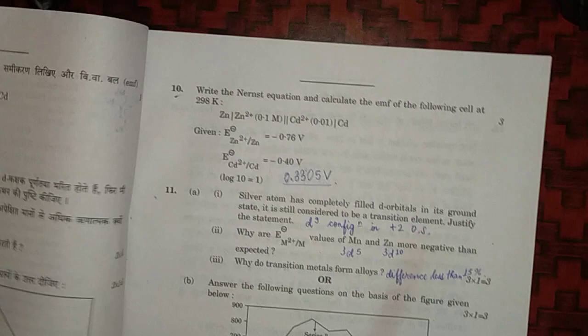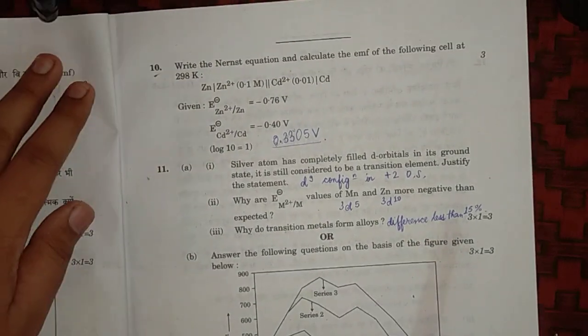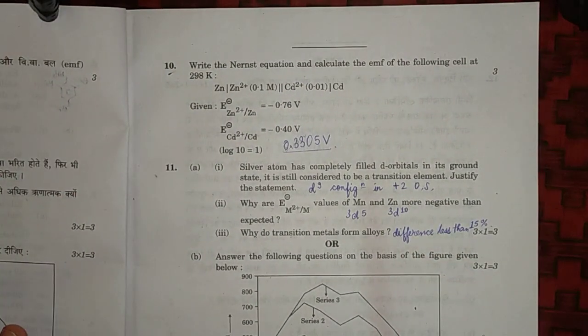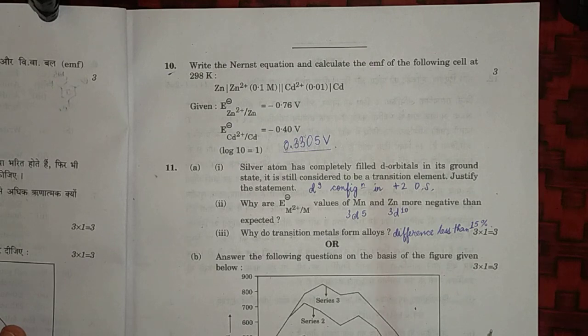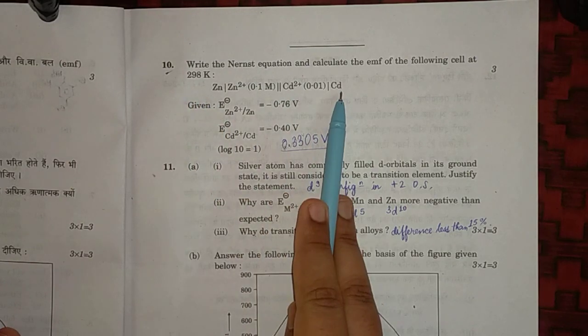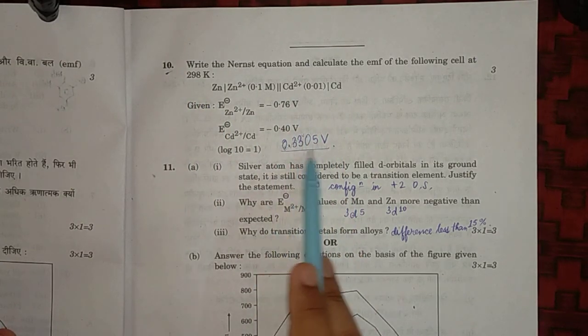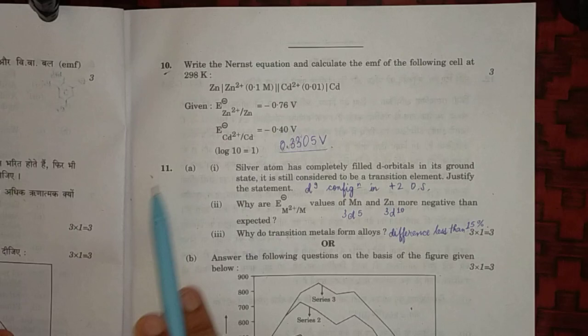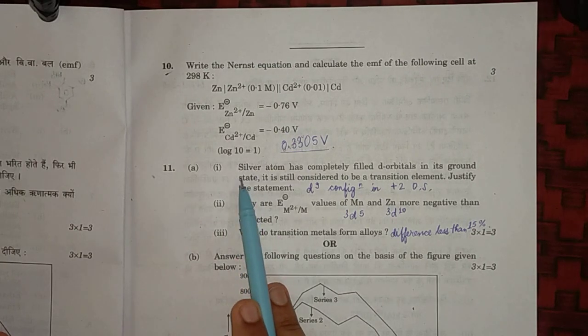Tenth question: write the Nernst equation and calculate the EMF of the following cell at 298 Kelvin. Here when we solve this, the answer will come out to be 0.3305 volt.